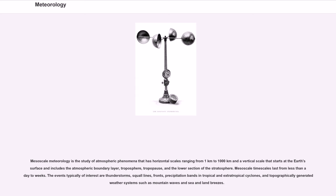Mesoscale meteorology is the study of atmospheric phenomena that has horizontal scales ranging from 1 km to 1,000 km and a vertical scale that starts at the Earth's surface and includes the atmospheric boundary layer, troposphere, tropopause, and the lower section of the stratosphere. Mesoscale time scales last from less than a day to weeks. The events typically of interest are thunderstorms, squall lines, fronts, precipitation bands in tropical and extratropical cyclones, and topographically generated weather systems such as mountain waves and sea and land breezes.